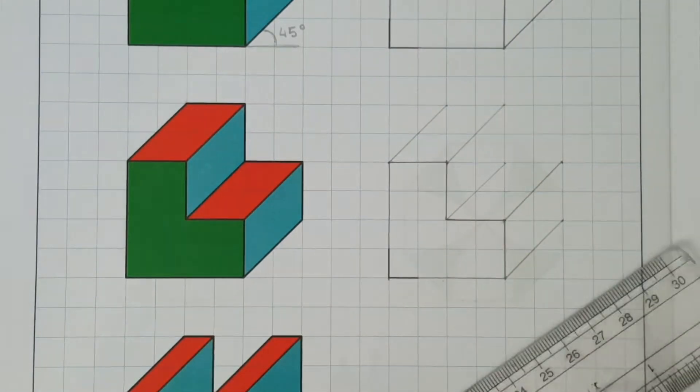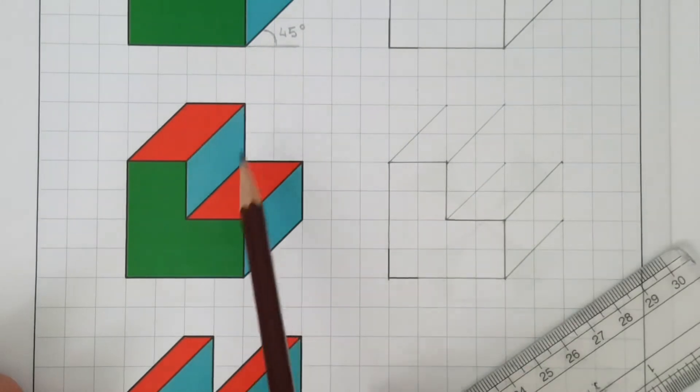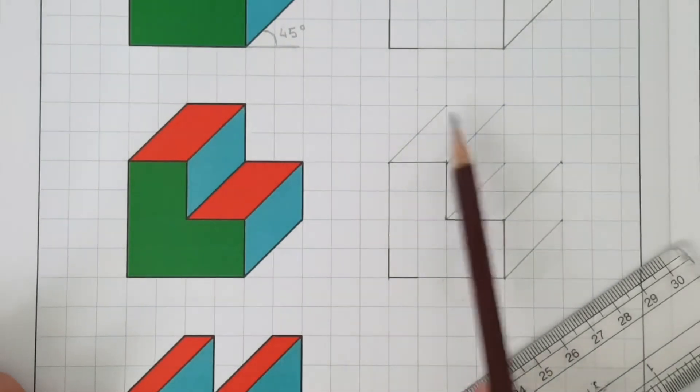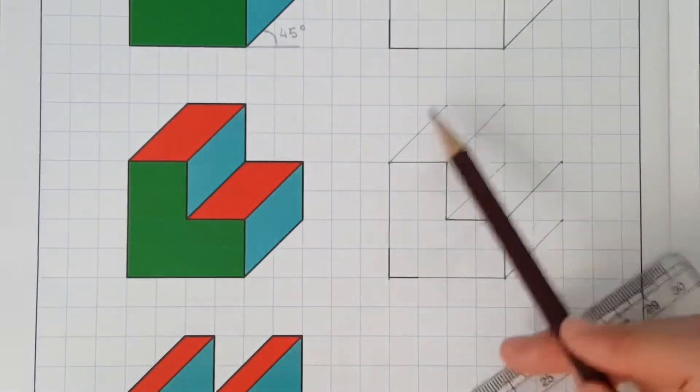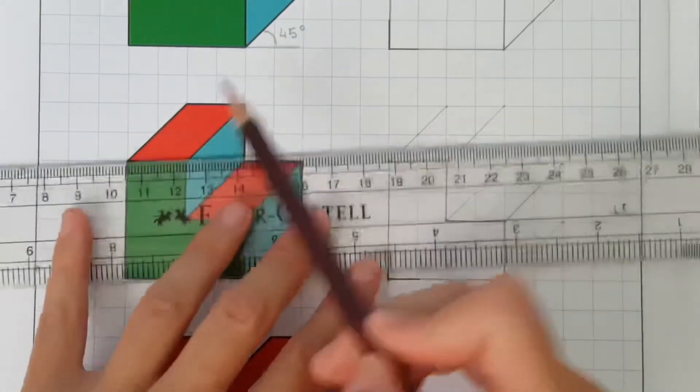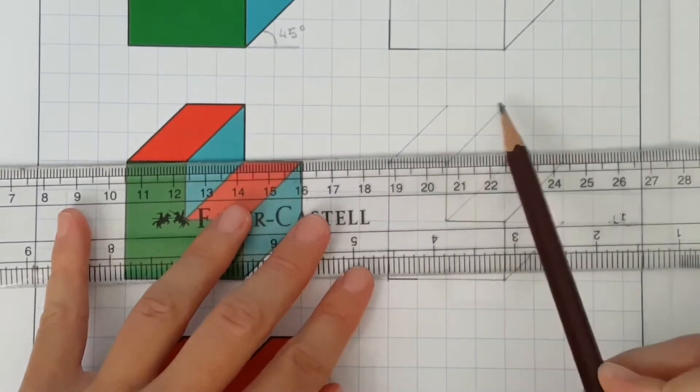Alright, now those are all the 45 degree angled lines. Now let's connect them all together. So let's start from the top and work our way to the bottom.